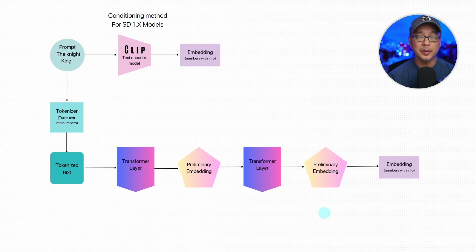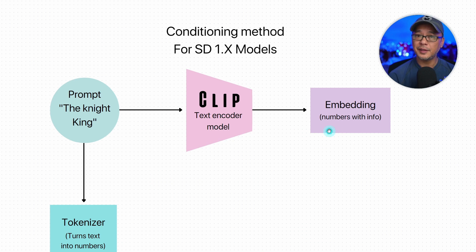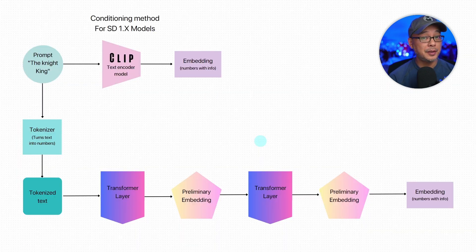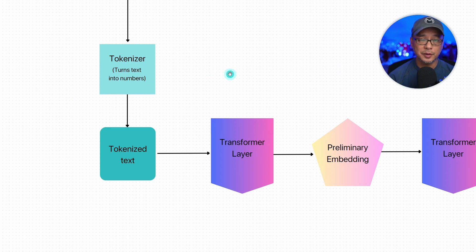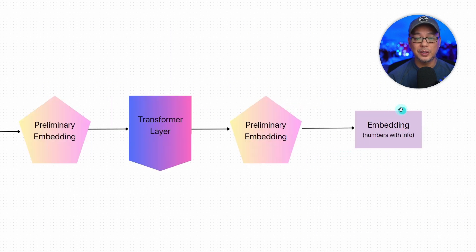The CLIP model itself is another conditioning method. In its simplest form, CLIP is a text encoder embedded into a specific model — let's say Realistic Vision as an example. From the prompt, it goes through the text encoder model known as CLIP and creates an embedding. All you need to know is that it's information converted to numbers. The CLIP model follows this flow: the prompt enters a tokenizer, which turns the text into numbers. Those numbers are converted into tokenized text, which goes into a transformer layer to create a preliminary embedding. This repeats for 12 steps, and then you get your final embedding.